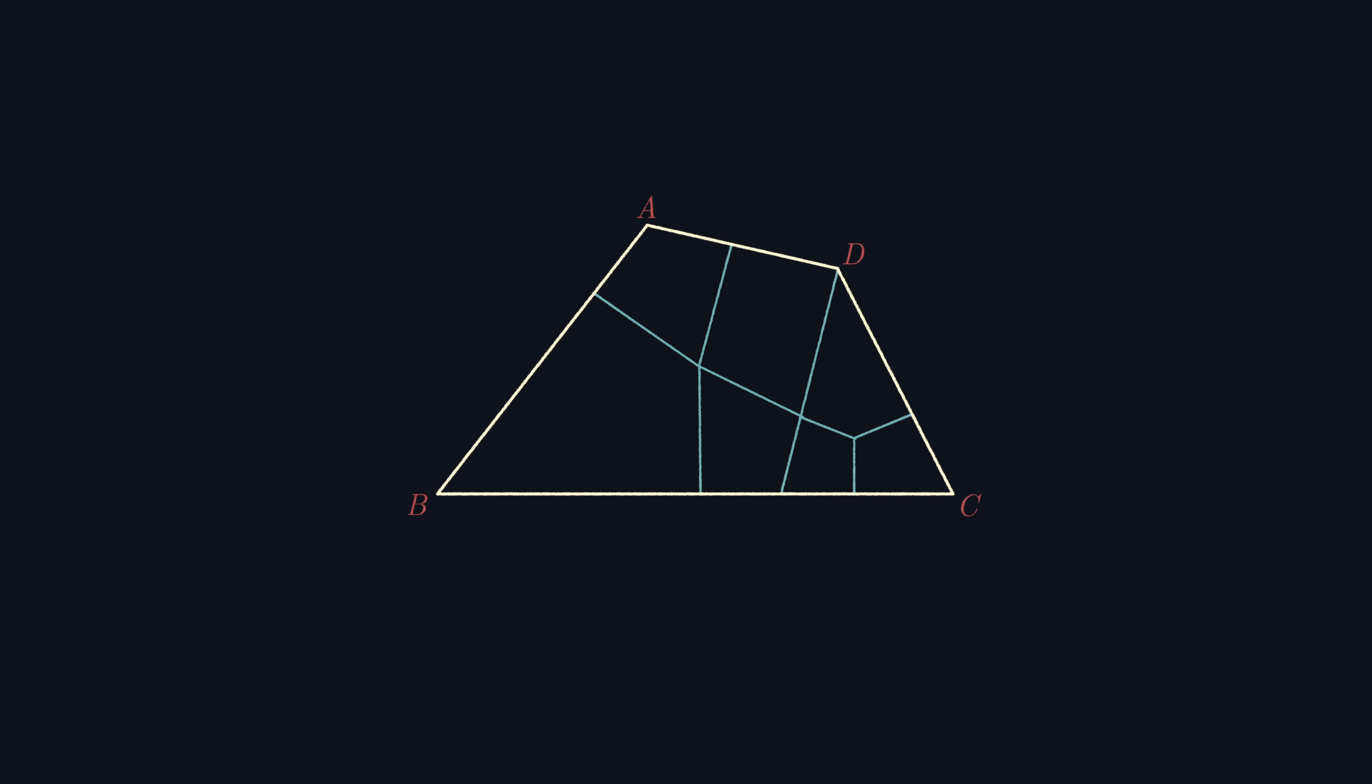It's challenging to approach this problem at first, so a reasonable idea would be to consider a shape simpler than a quadrilateral: a triangle. And rather than seven kites, let's see what the minimum number of kites we can get is.